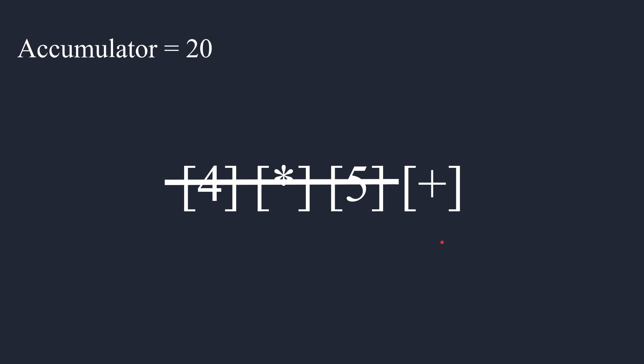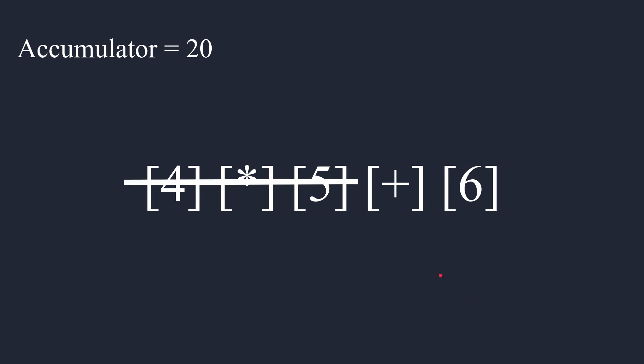What is the next token? It's token plus. Well, plus what? Plus 6. Okay, great. And then we do plus 6 on the accumulator. We get 26. Token's consumed. Now we've run out of tokens, which means that the accumulator holds our result. Great. The answer is 26.